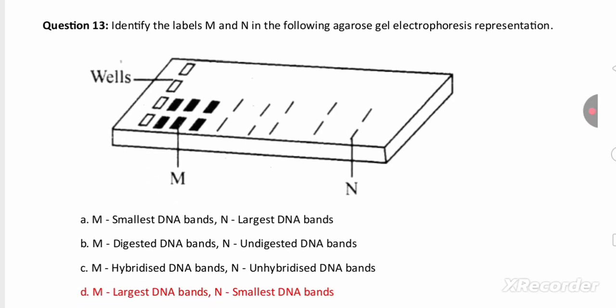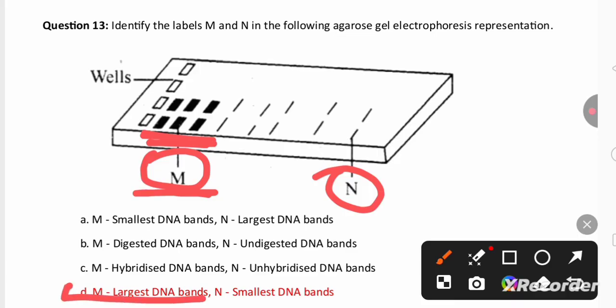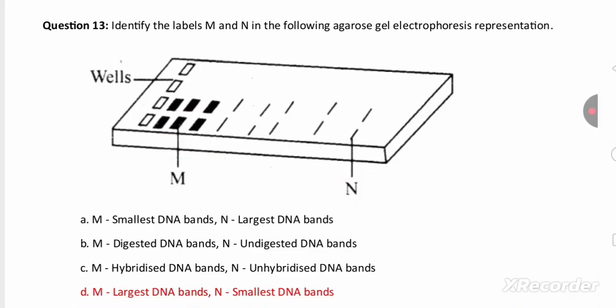Next question is regarding electrophoresis. You can find here electrophoresis representation and we need to identify M and N. M is near the wells. So these are the DNA bands which are larger and cannot migrate faster. N are the smaller DNA bands. As they are smaller they can migrate faster towards anode.